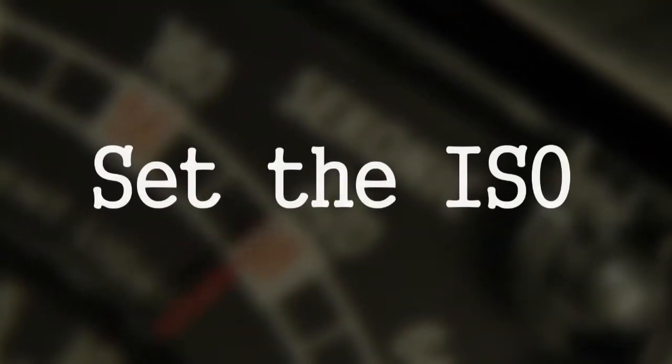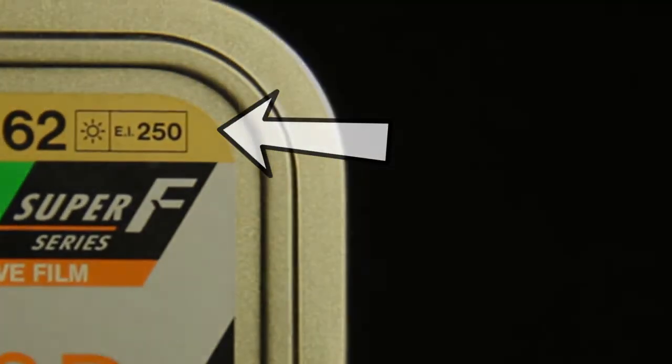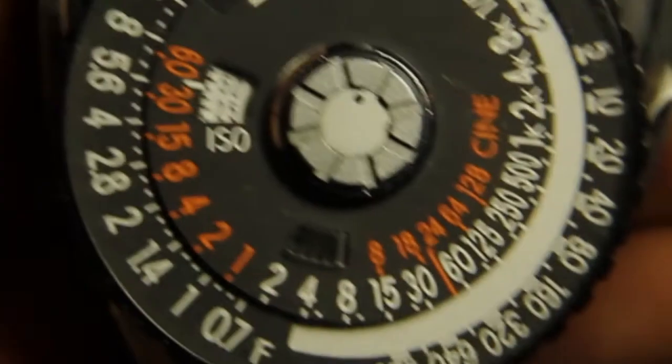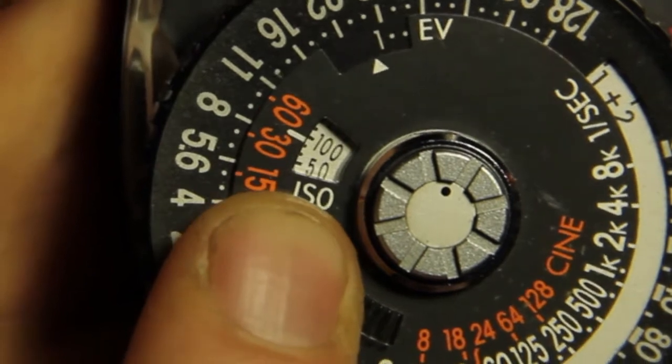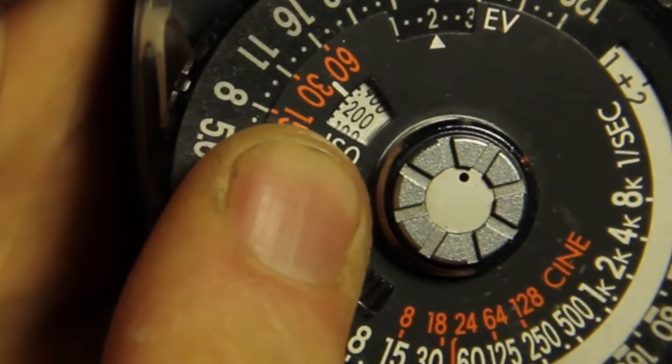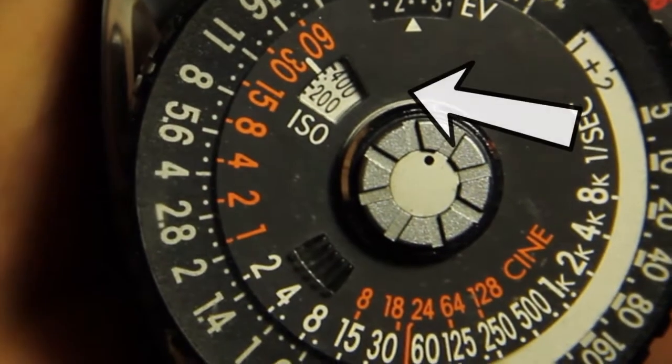To do an ambient light meter reading, first set the ISO on the light meter. Check the ISO of the film stock you are using. Set the ISO by placing your finger on the raised pattern near the silver stop button and moving the dial until you see the corresponding number in the ISO window.